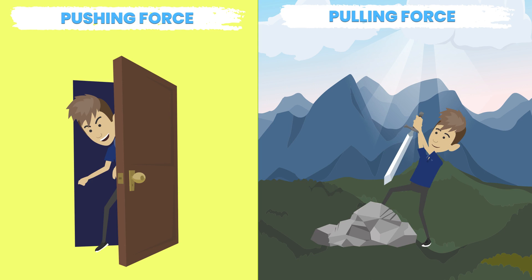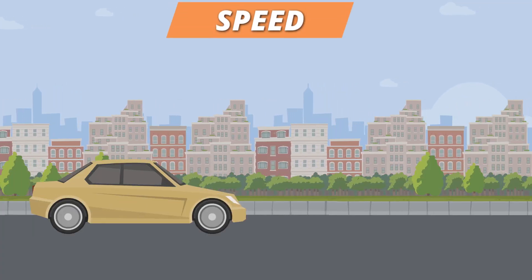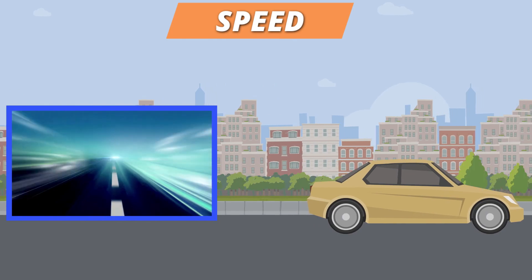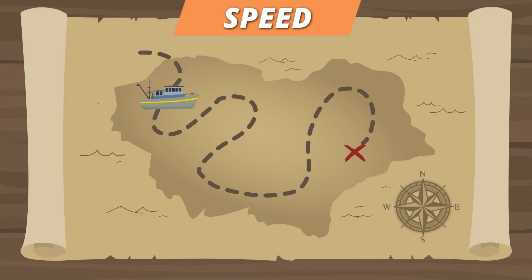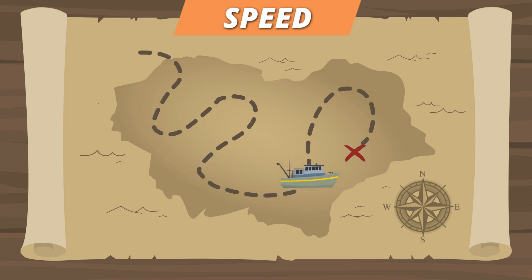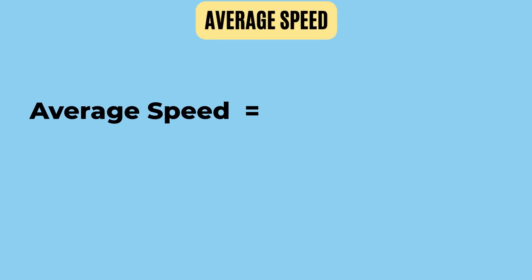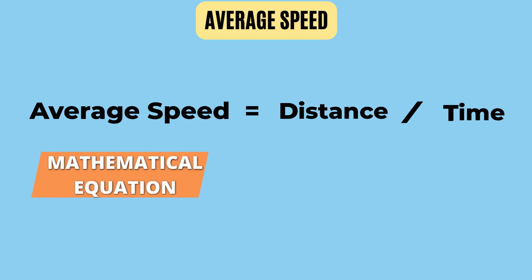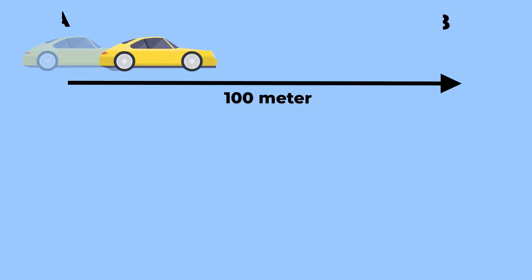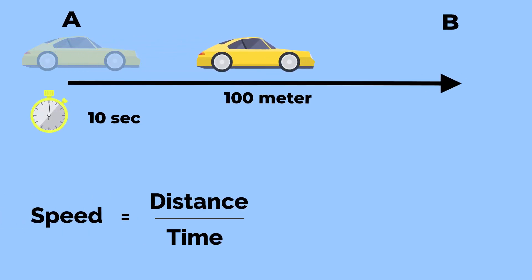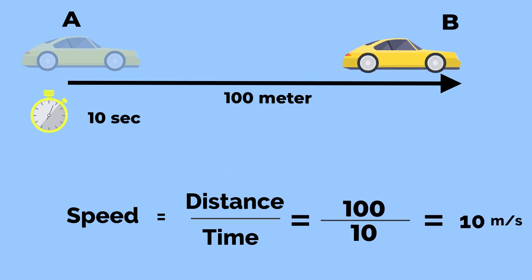Now that we know what causes a body to move or stop, let's see what speed is and how we can calculate it. Speed describes the distance an object travels in a given time — it describes an object's rate of movement. Average speed can be calculated by dividing the distance traveled by the total time it takes to travel that distance. The equation is: speed equals distance divided by time. For example, if an object covers 100 meters in 10 seconds, then it traveled at an average speed of 10 meters per second.